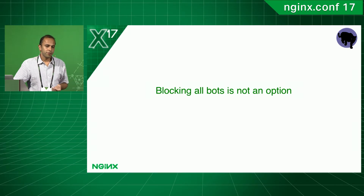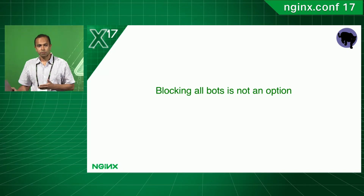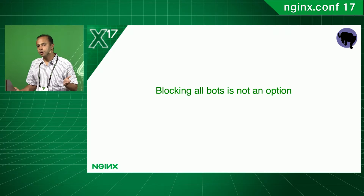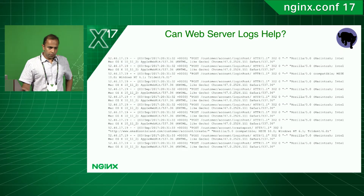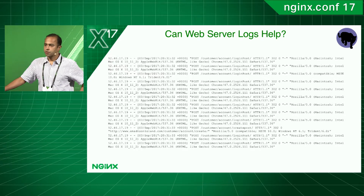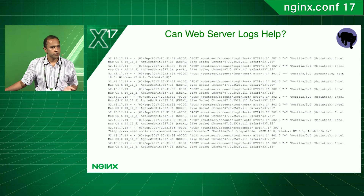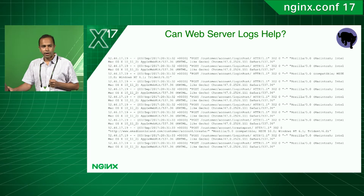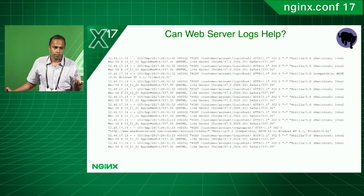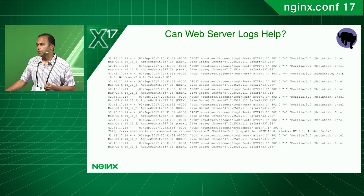Because we have different kinds of bots — some good, some bad — blocking all bots is not an option. You have to identify their intent before taking action. Looking at server logs doesn't provide enough context: user agent strings, IP addresses, and timing information alone aren't sufficient to determine whether a bot is good, bad, or an aggregator.